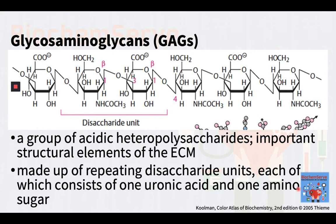The glycosaminoglycans are a group of acidic heteropolysaccharides and are important structural elements of the extracellular matrix, abbreviated as ECM. They are important constituents of proteoglycans. The glycosaminoglycans are made up of repeating disaccharide units, each of which consists of one uronic acid and one amino sugar. The proteoglycans bind large amounts of water and fill the gaps between the fibrillar components of the ECM in the form of a hydrated gel, which inhibits the spread of pathogens in the ECM.